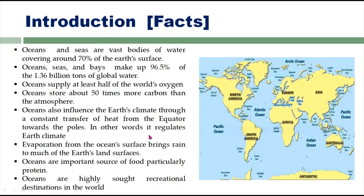In other words, oceans regulate the Earth's climate. The oceanic currents move from the equator towards the poles and from the poles towards the equator, distributing temperature across the planet. Evaporation from the oceanic surface also brings rain to much of the Earth's land surface — most rainfall happens because of the presence of the ocean.